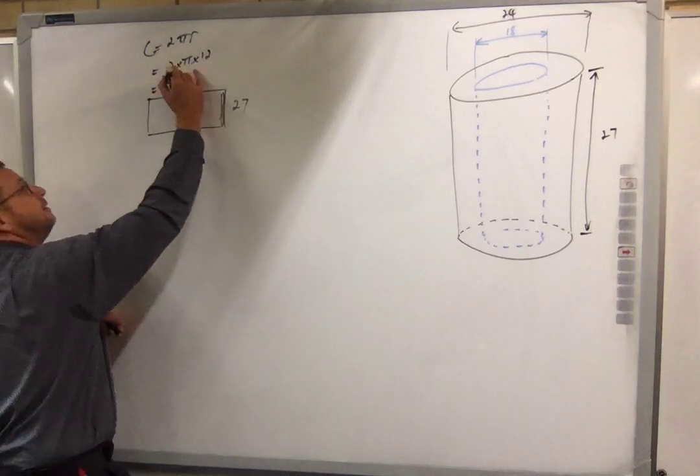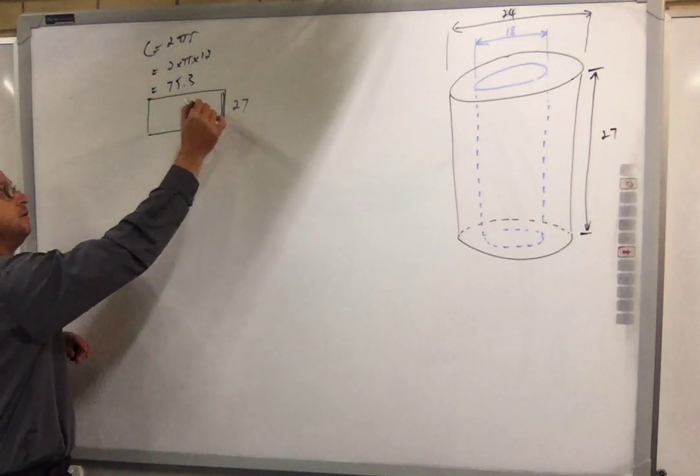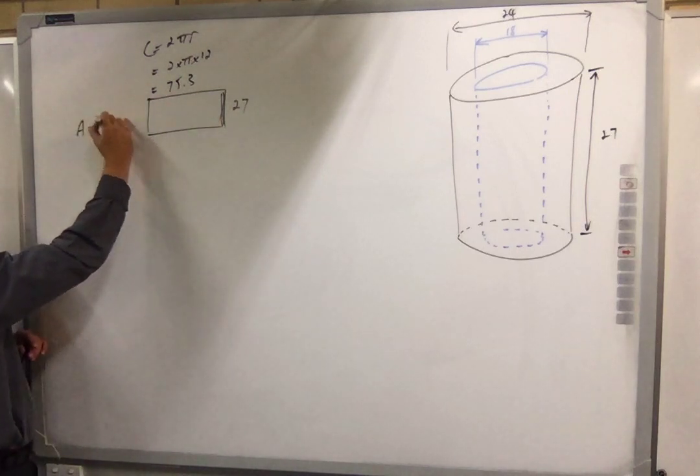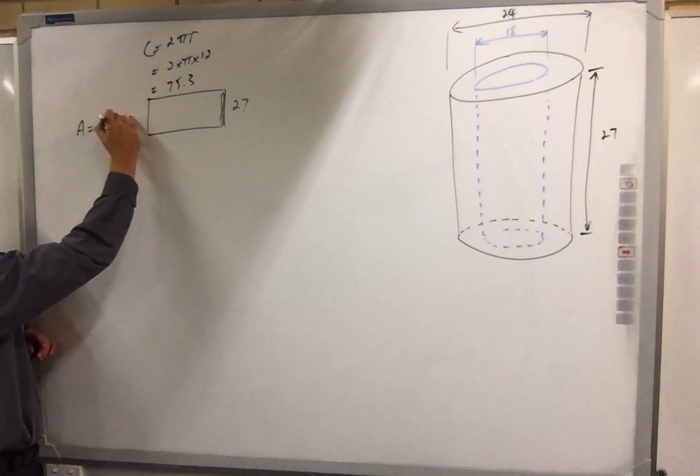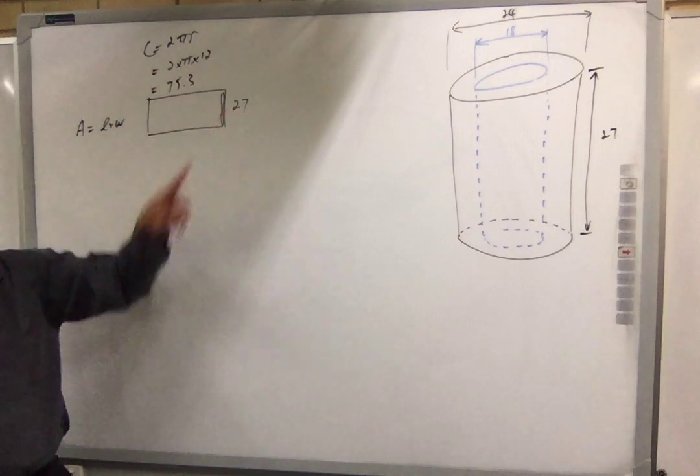75.3. So this now becomes a rectangle. What's the area of a rectangle? So this area is going to be 75.3 times 27.